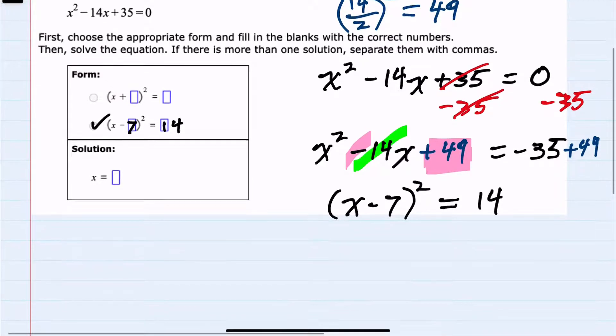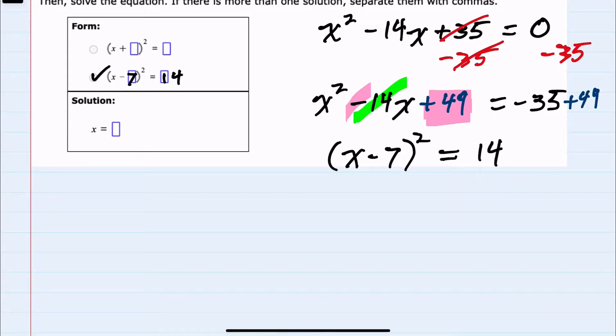Now I can use the square root property to find the solution by taking the square root of both sides. This cancels the square on the left-hand side, leaving me with x - 7 = ±√14.